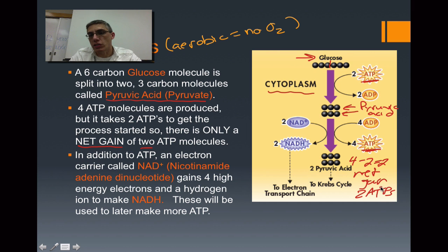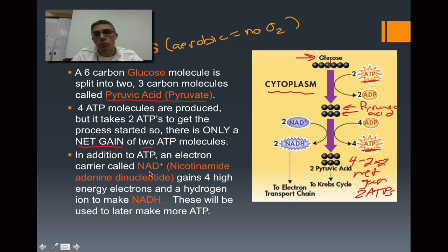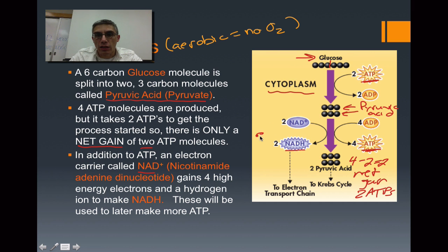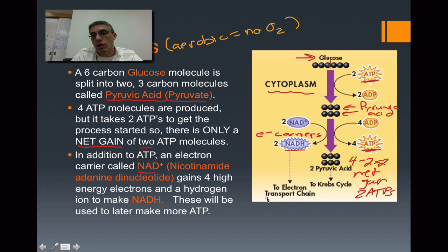In addition to producing the two ATPs, we're also going to be producing an electron carrier. We have some high-energy electrons that need to be carried somewhere, so we're going to use a molecule called NAD — nicotinamide adenine dinucleotide — and this NAD is going to be converted into NADH. These are electron carriers, and these electrons represent energy that will be carried later on to the electron transport chain.